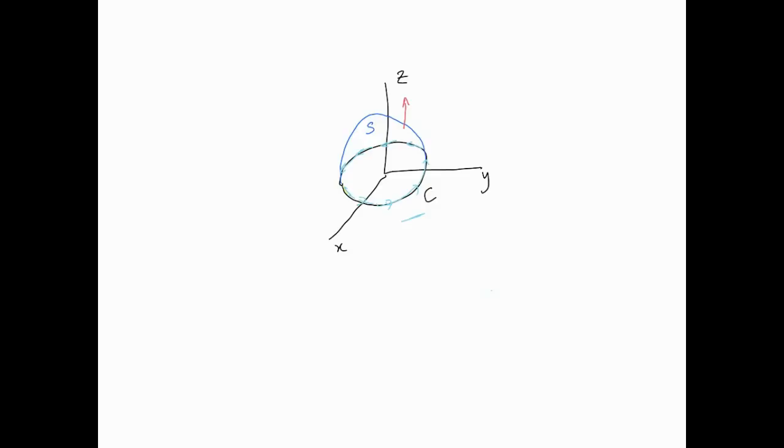The right-hand rule means that with your right hand, you point your thumb towards the normal of the surface, and then your fingers curl towards the direction that C is in. That is called a positive orientation.